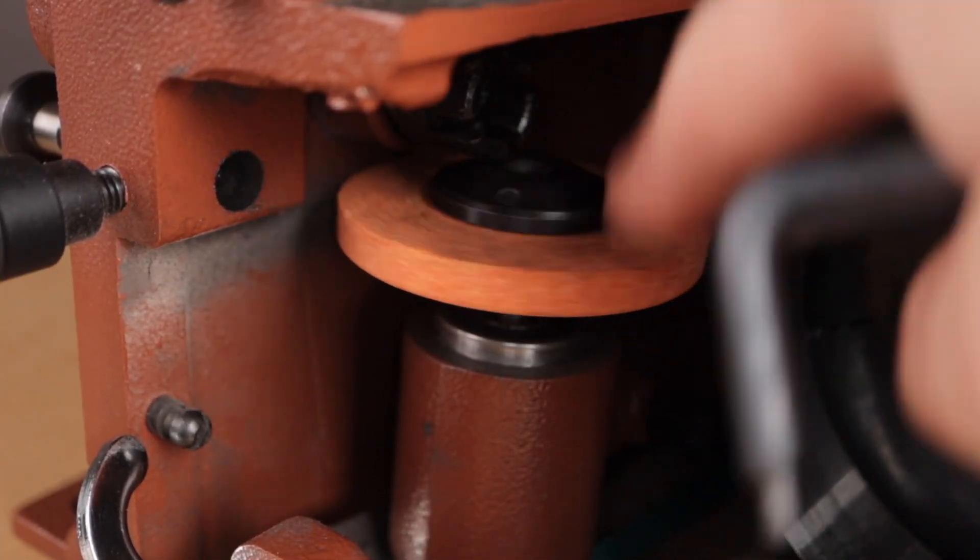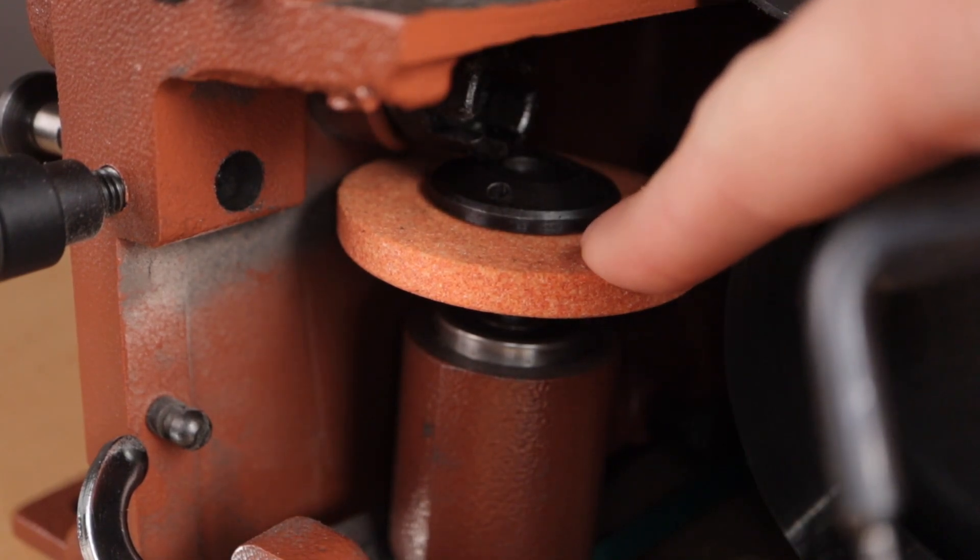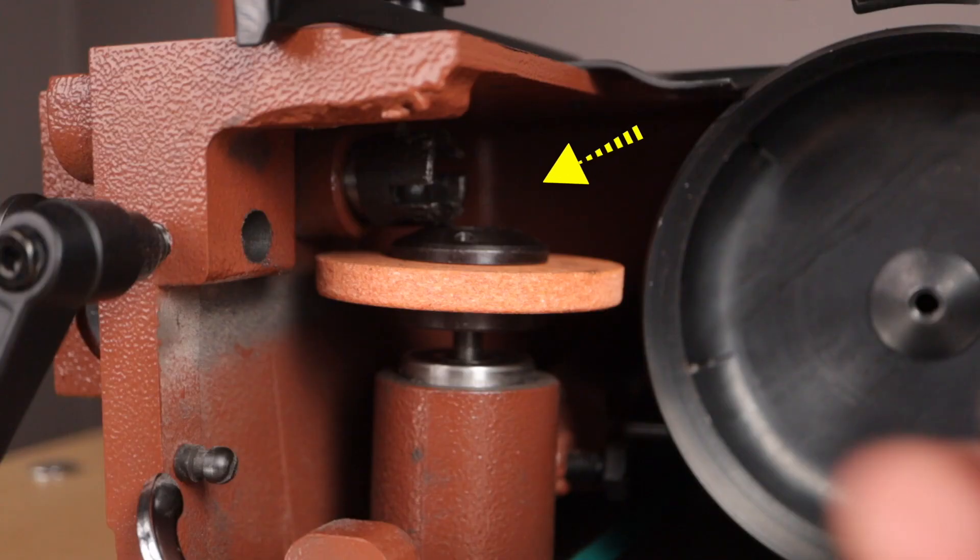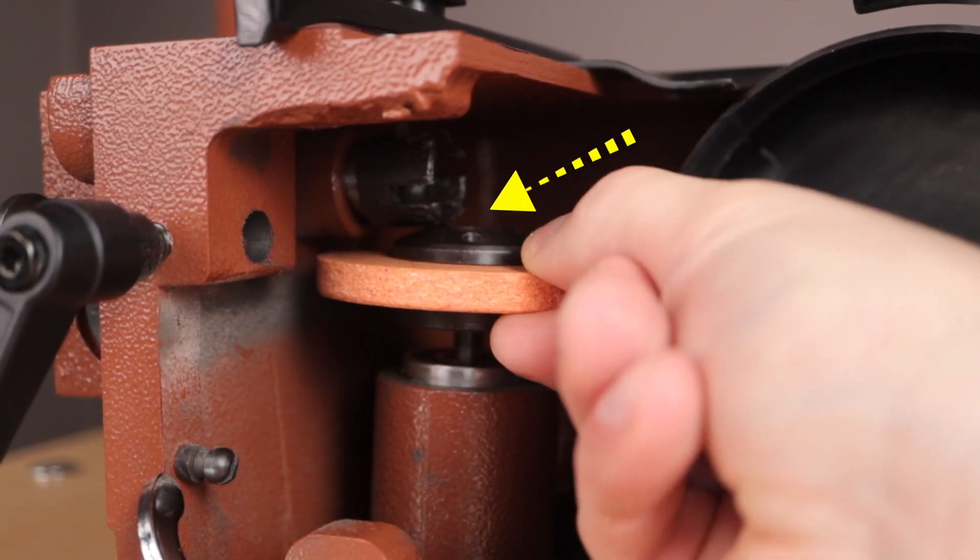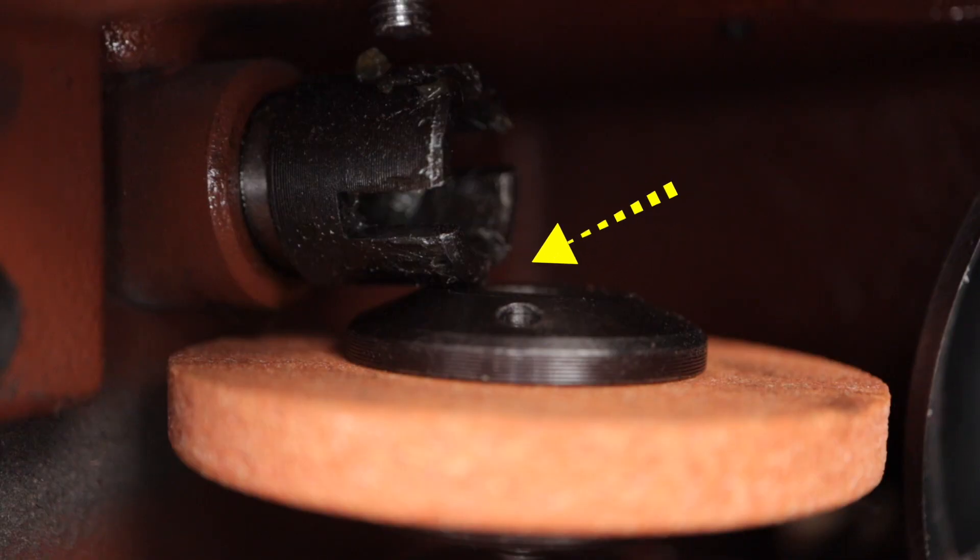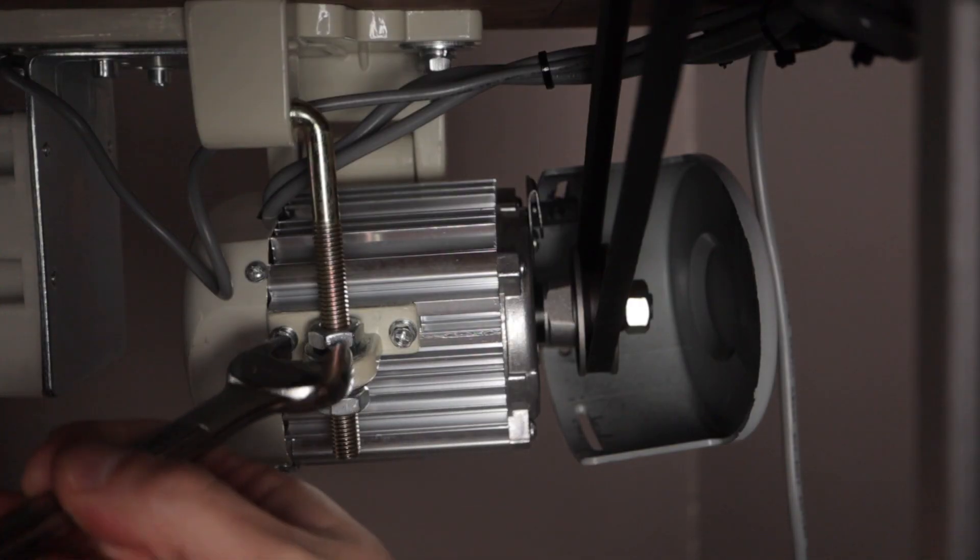As you unscrew you will notice that it will not come out because it is blocked in, so we have to make an adjustment. To remove the sharpening stone, start by removing the belt from the motor.